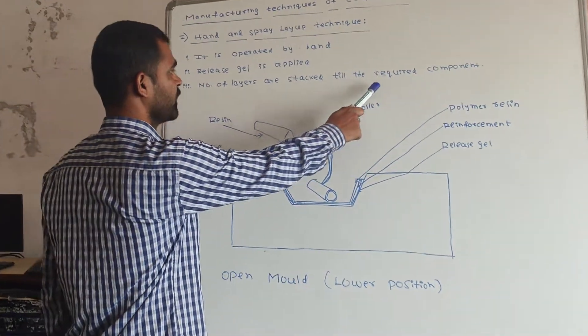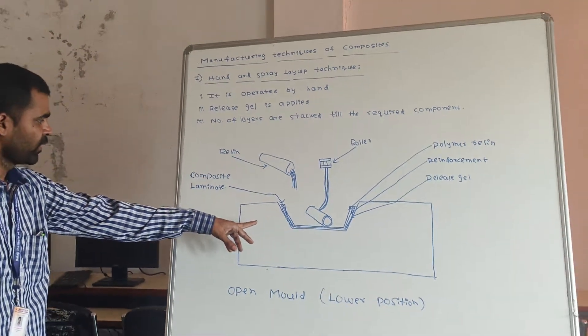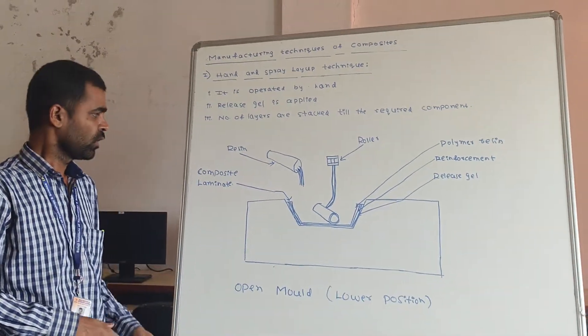Numerous layers are stuck till the required component is formed. The roller pressure is applied on the composite. It is operated at 1965 Newton.